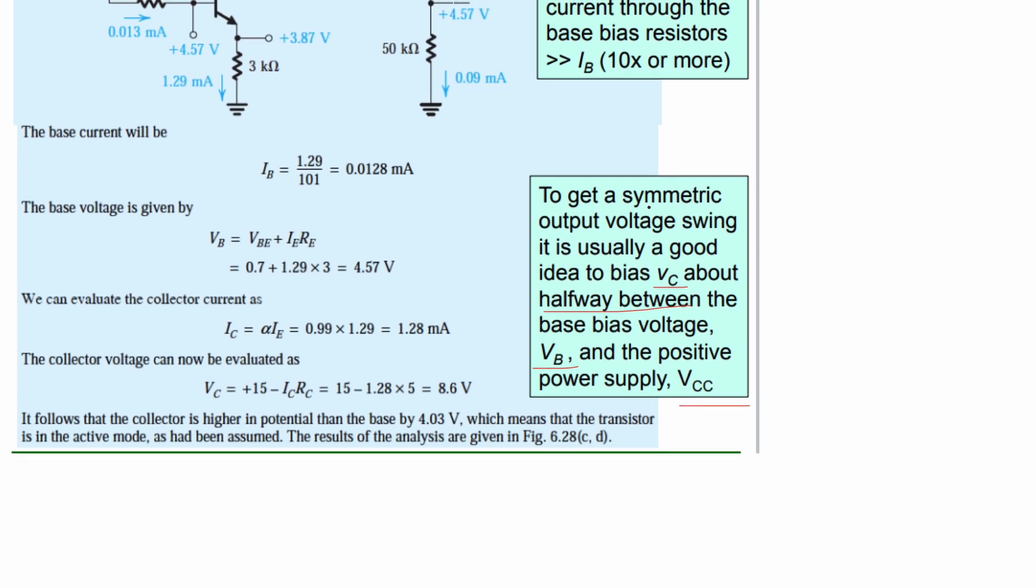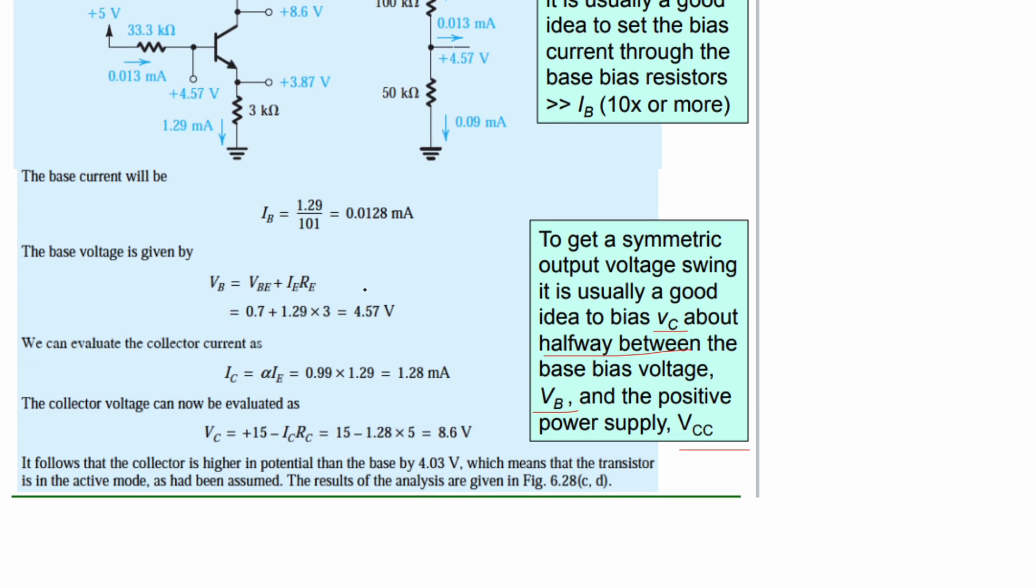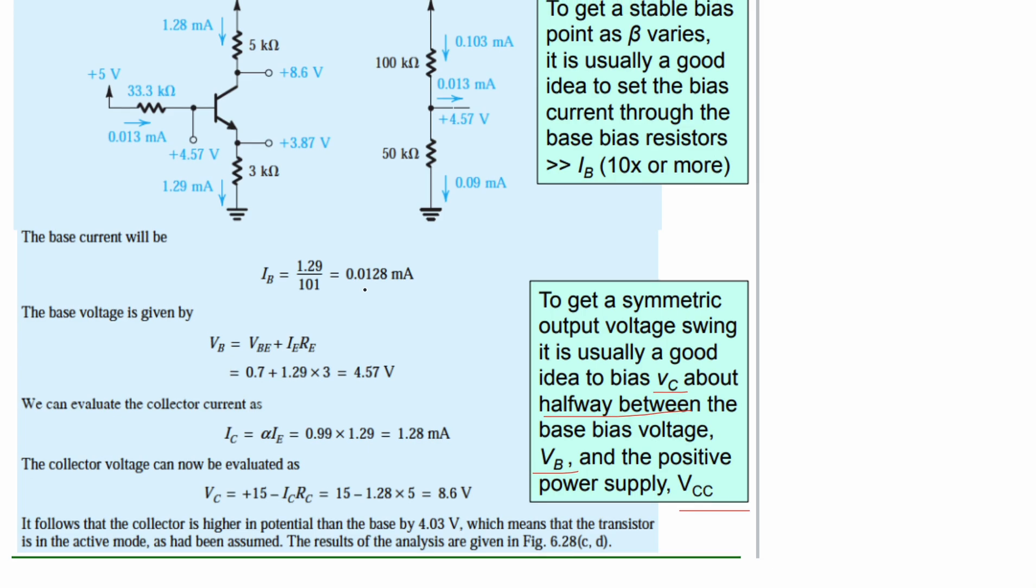To get a symmetric output voltage swing, it's usually a good idea to bias VC about halfway between the base bias voltage, VB, and the positive power supply, which is VCC, which is what we're trying to do here. It follows that the collector is higher in potential than the base, which means the transistor is in our active mode, which we mentioned earlier, as had been assumed, and the results of the analysis are given here.